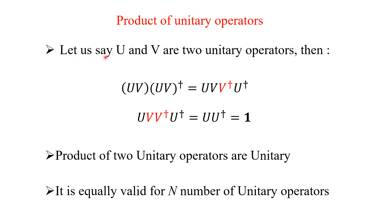One important property of the unitary operator is that the product of unitary operators is also a unitary operator. Let U and V be two unitary operators. Then (UV)† = V†U†, and since V V† = I and U U† = I, we get (UV)(UV)† = I. So the product of two unitary operators is unitary — and in fact, the product of n unitary operators is also unitary.